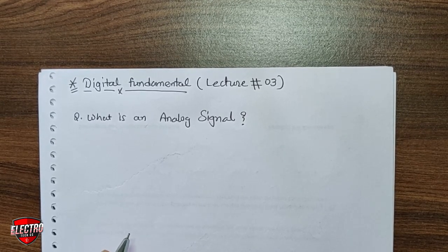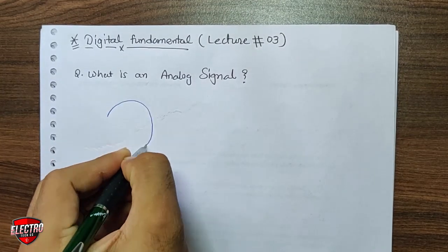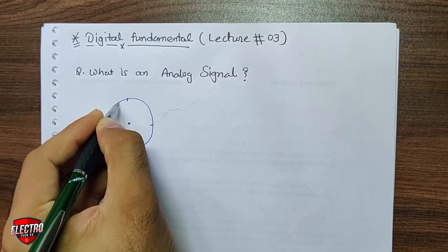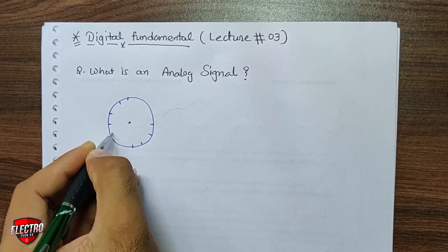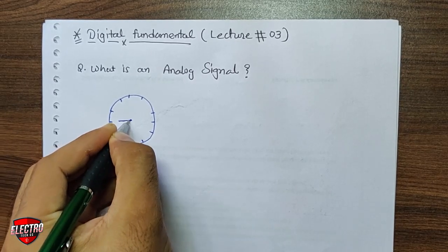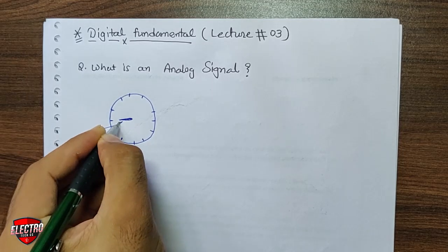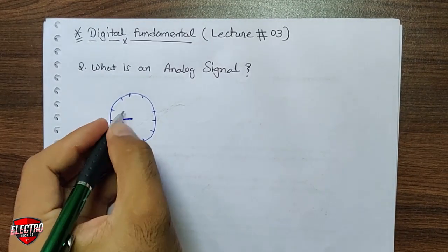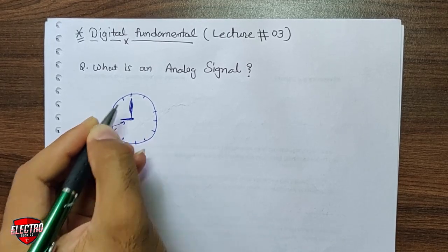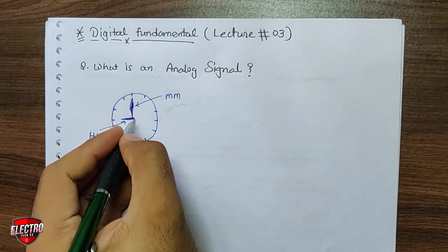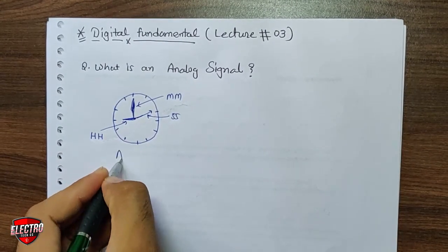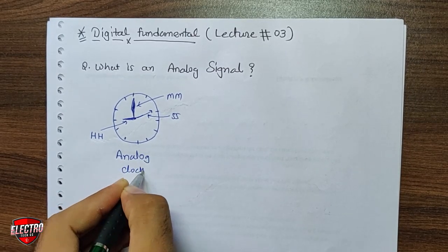To understand analog and digital signals, let us start with an example. We have one analog clock. In the analog clock there are three hands: the first hand indicates hours (HH), the second indicates minutes (MM), and the third indicates seconds. This is one type of analog clock or analog watch.